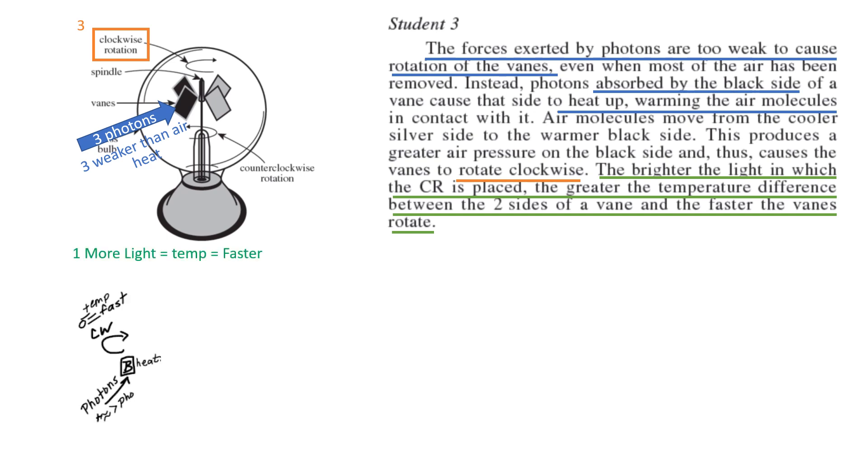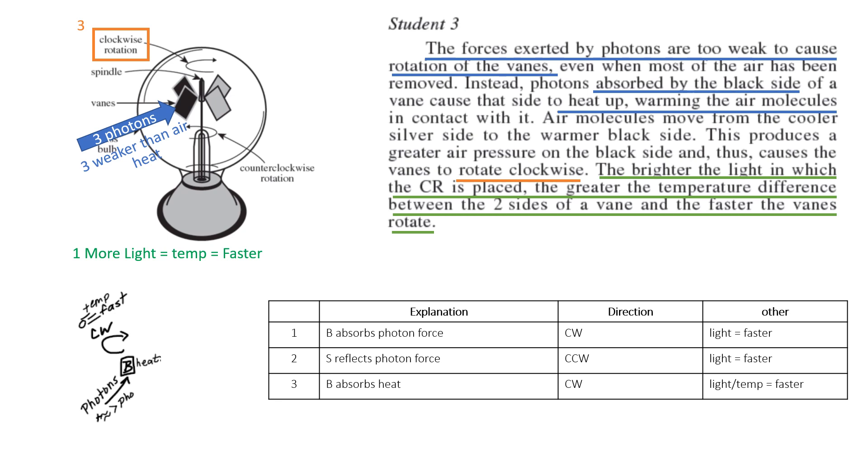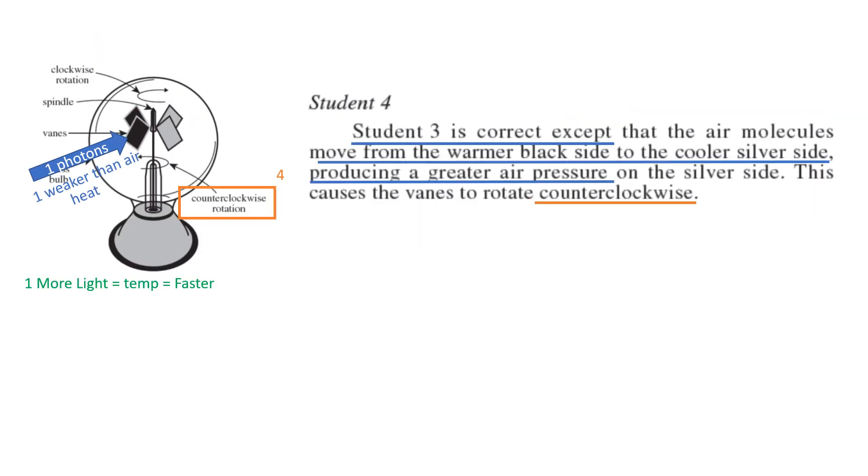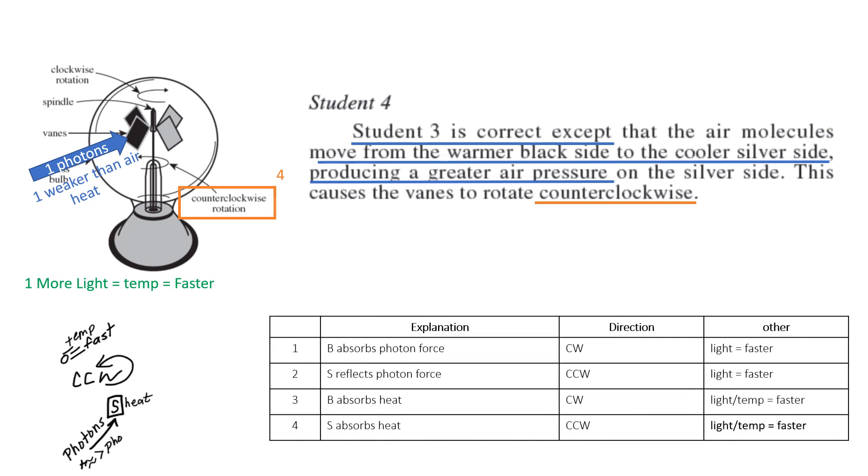This is my drawing, just photons hitting the black side clockwise rotation. I put a little plus there. That plus means the air is greater than the photons that need the heat and temperature still equals faster. Again, you might have a table that helps you to understand it better. Do what works best for you. Student four: student three is correct, except the heat moves from the black side to the silver side has a counterclockwise rotation. So counterclockwise is the main difference. I just changed the B to an S and the counterclockwise. So that's the main difference.